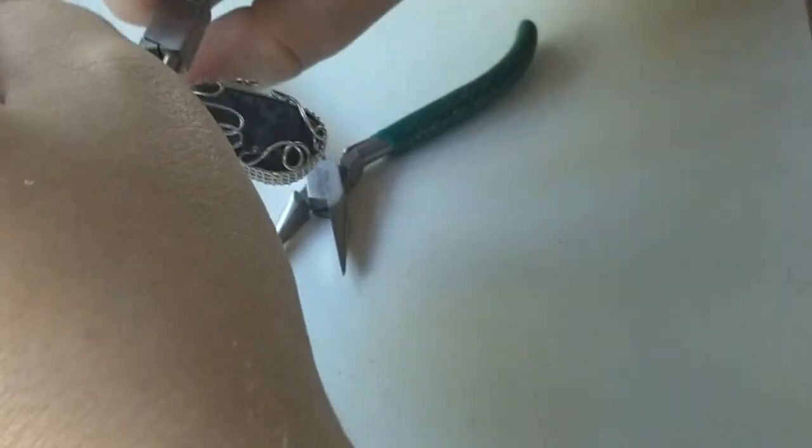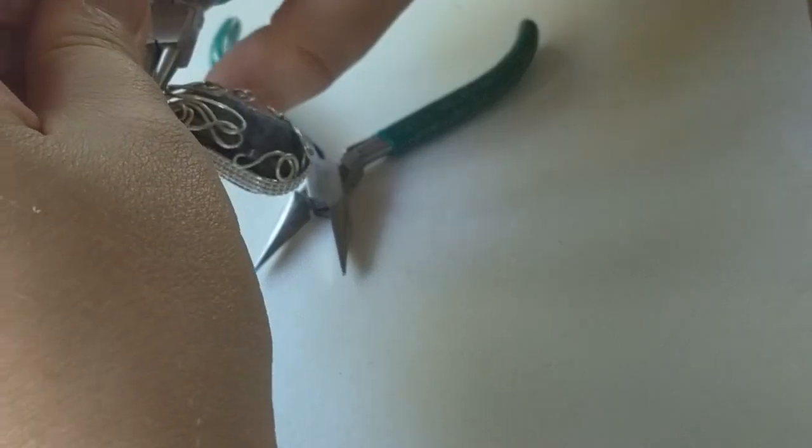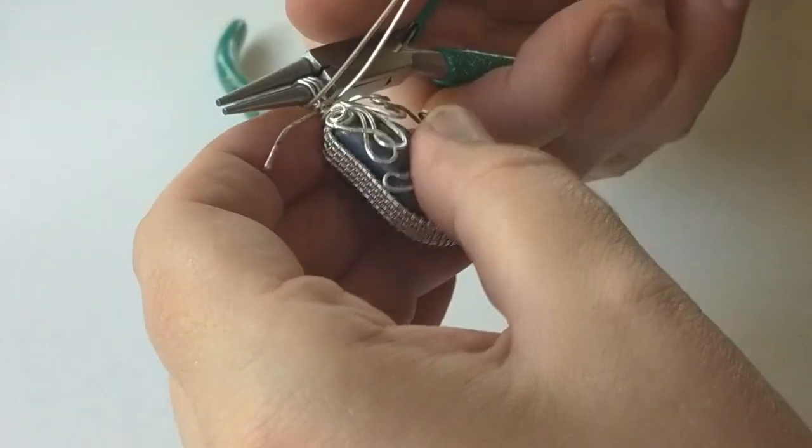Once you are satisfied with the accent wires, take the remaining wires and make them parallel with the bail wires and straighten.